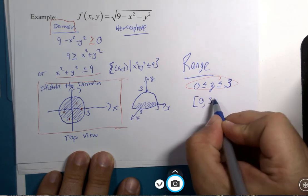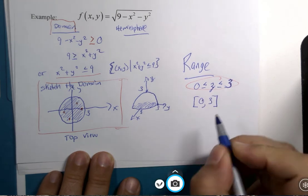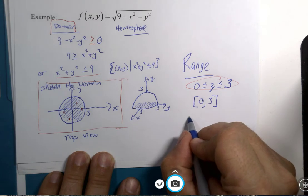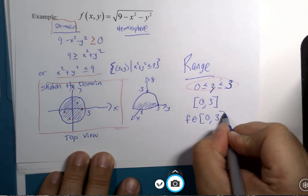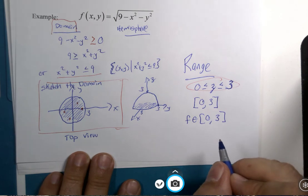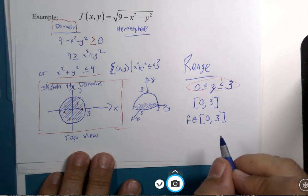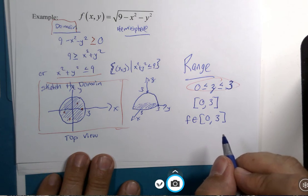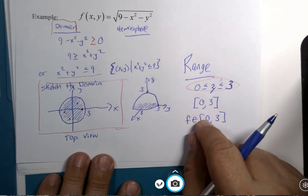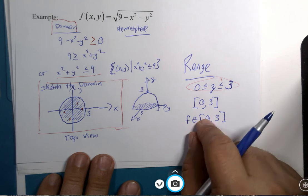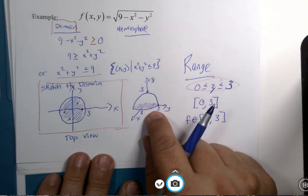You could use interval notation, 0 to 3. You could say f is an element of 0 to 3. There are so many ways and notations of writing sets of numbers out. I don't want to get too picky on that right now. I want you to be able to effectively describe it to somebody else first.